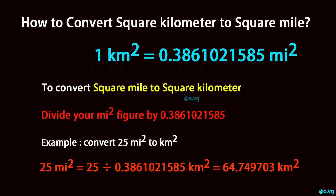To convert square mile to square kilometer, divide your square mile figure by 0.3861021585.